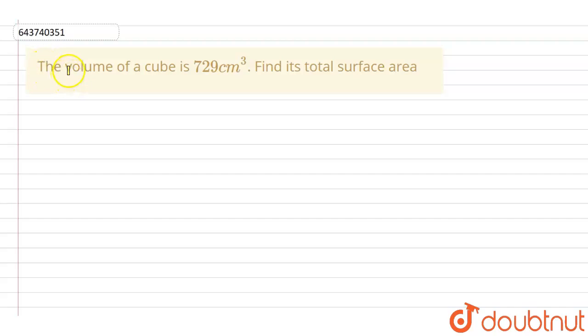In this question it is given that the volume of a cube is 729 centimeter cube. We have to find out the total surface area of this cube.